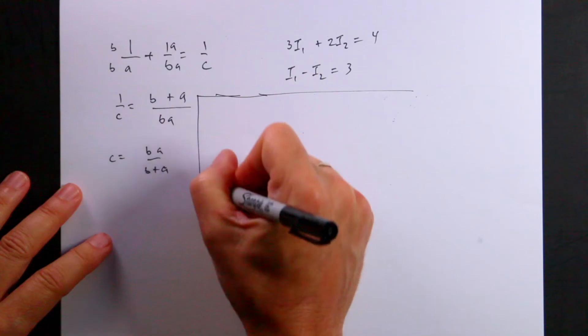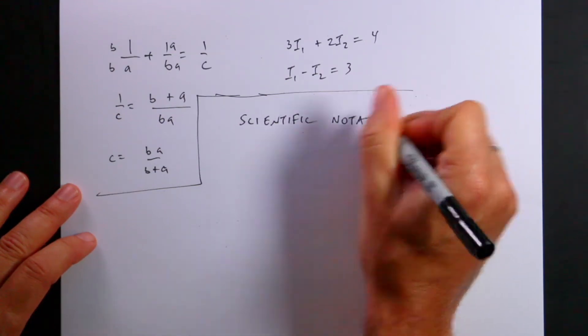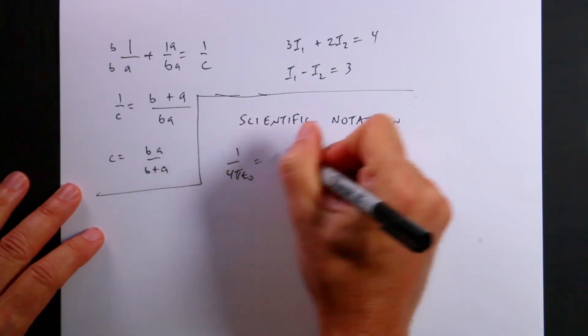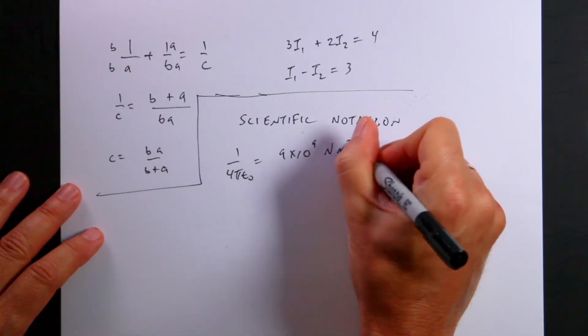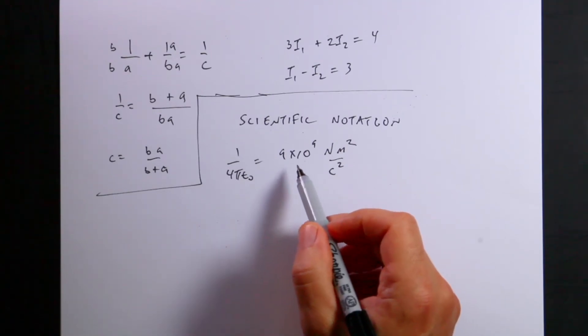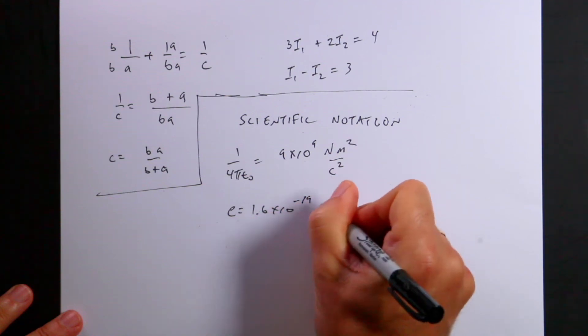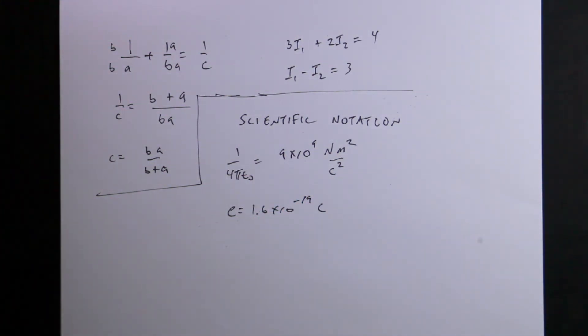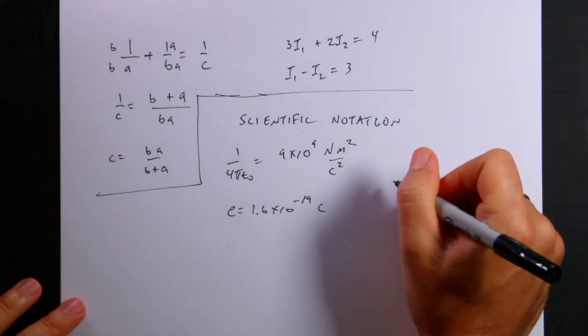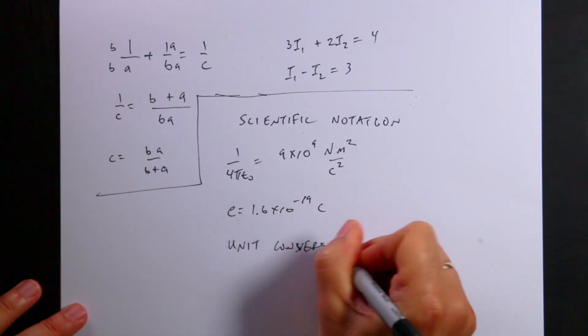Here's another important thing: scientific notation comes up a lot. If we look at things like the electric constant 1 over 4 pi epsilon naught, that's 9 times 10 to the 9th newton meters squared per coulomb squared. So these numbers are huge. The charge of an electron is 1.6 times 10 to the negative 19th coulombs. So if you can't deal with scientific notation, it's going to cause a lot of problems. You might want to go back and review that. Review conversion of units. I have a video on unit conversions. So unit conversions.